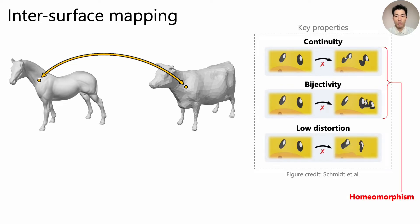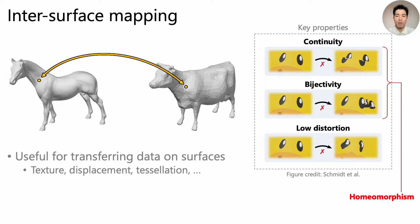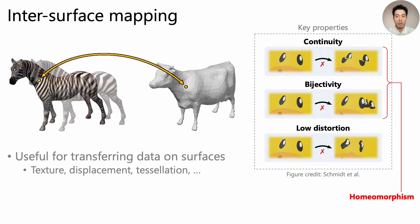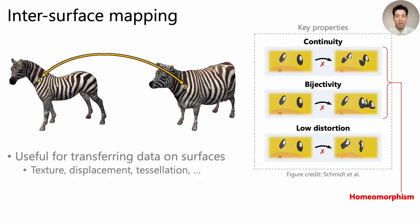Maps that have the first two properties are called homeomorphisms, and we specifically target these types of maps. Such maps are useful for transferring various kinds of data on surfaces such as texture, displacement, tessellation, and so on. And in general, they are difficult to compute.